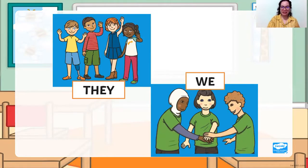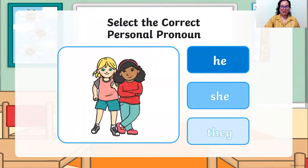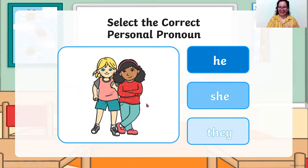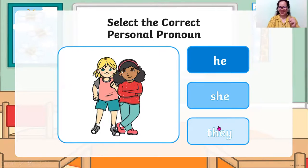Now let's have some activity to see if you can answer. Select the correct personal pronoun. Two girls — he, she, or they? There are two girls, so he and she are used only if your subject is singular. But they is used if you are talking about two or more people. So the correct answer is they — because you are not including yourself with these people.